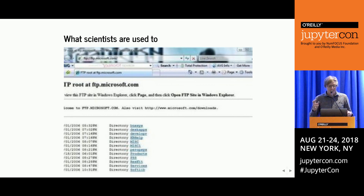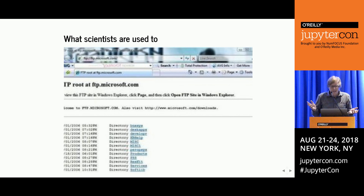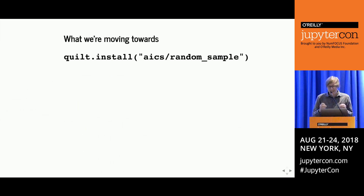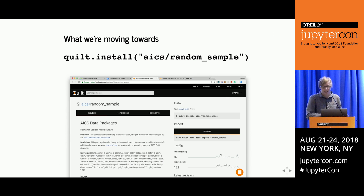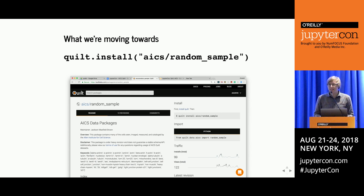If anyone has ever worked in a scientific lab, this image looks familiar. Scientists are pointed to a web page and told 'just download the files'—but you don't know what's in them, what size they are, how to deserialize them, whether they're TARs or ZIPs. What we're trying to move towards is: just give me the data and we can view it on a catalog. Quilt will pre-process and populate metadata for us—whether it's been installed before, who's been installing it, what size it is, what files are in there, and how to deserialize it.